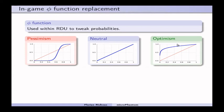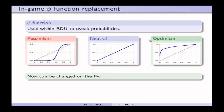So, now in MicroPhantom, we can change phi function on the flight, during a game. So, we start by a neutral phi function, and if we realize that we are losing the game, for instance, we are losing a lot of units, and we don't kill a lot of enemy units, then we will switch to a pessimistic phi function, in order to take more risks, and to catch up the game.